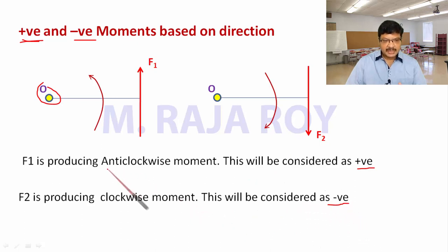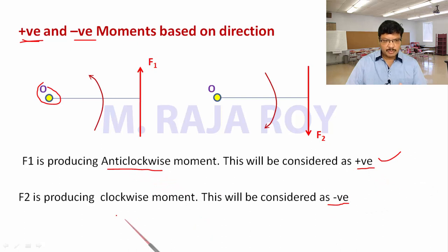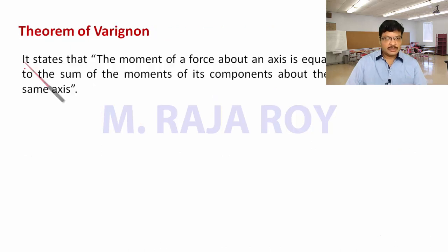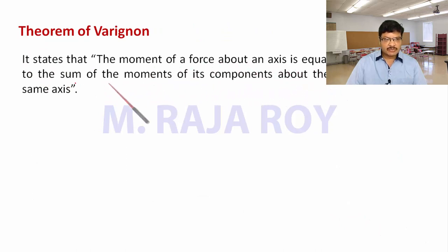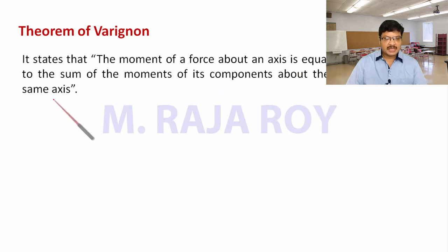The moment in the anti-clockwise direction means it is positive; the moment in the clockwise direction means that is negative. Theorem of Varignon states that the moment of a force about an axis is equal to the sum of the moments of its components about the same axis.